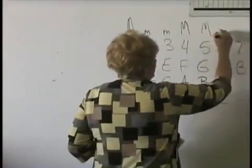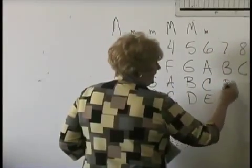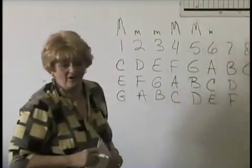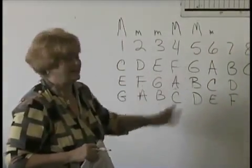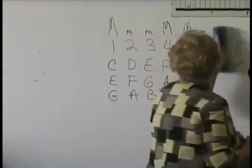This one would be B, D sharp, and F sharp. I can't have either one of those, so eight or seven is diminished. But we're not going to use it. We're only going to use one through six.